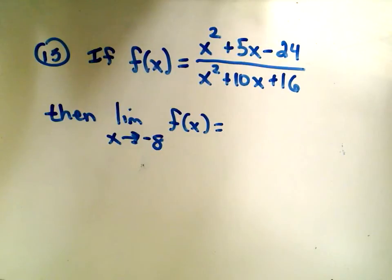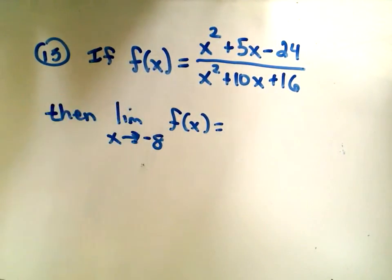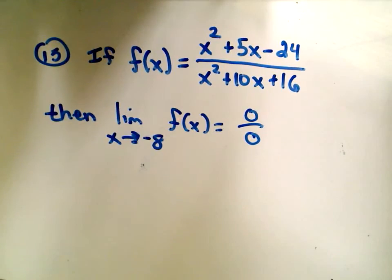With any limit problem, the first thing you should try to do is plug in negative 8 into the top and negative 8 on the bottom. But you can check that if you do this, you're going to get 0 over 0.